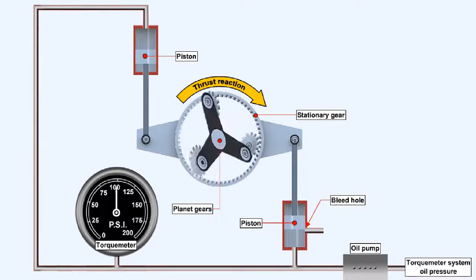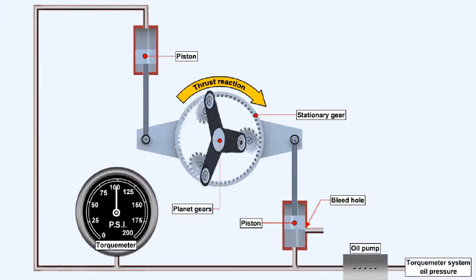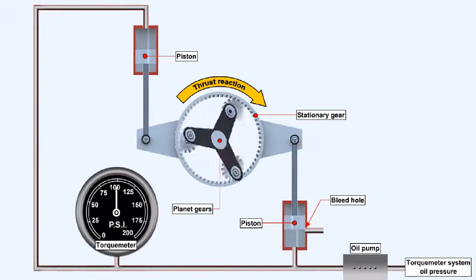One of the pistons in the system partially covers a bleed hole, which, if it's uncovered, will allow oil pressure to be dumped to the engine oil return.